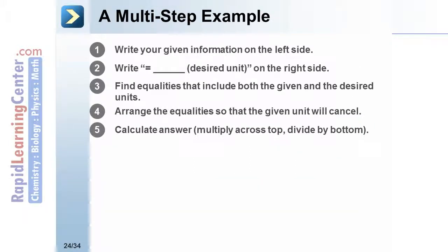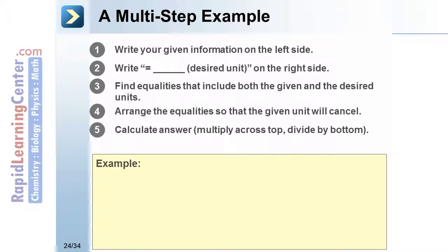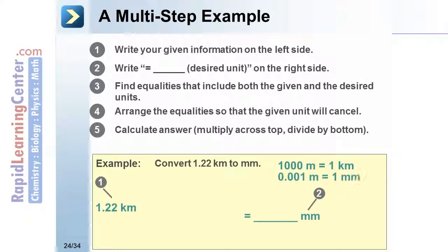Here's an example of a multiple step problem: convert 1.22 kilometers to millimeters. The given information is 1.22 kilometers. The desired unit is millimeters. There is no equality that contains both these units. However, 1,000 meters equals 1 kilometer and 0.001 meters equals 1 millimeter.